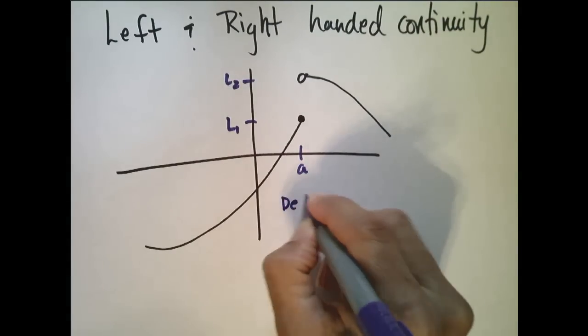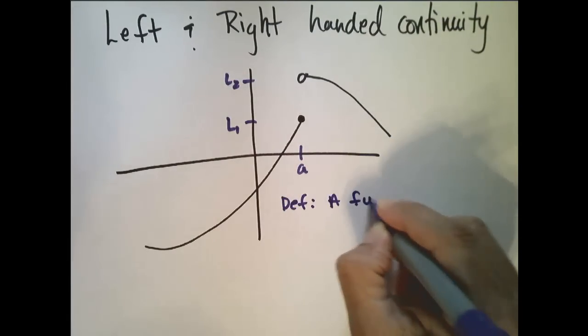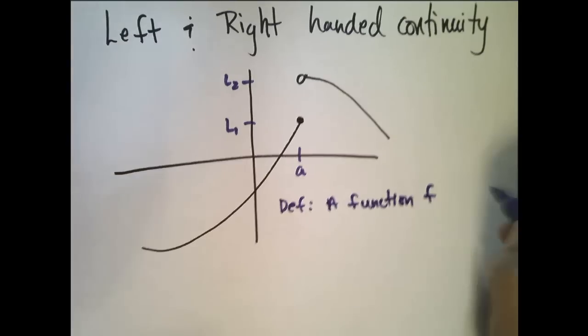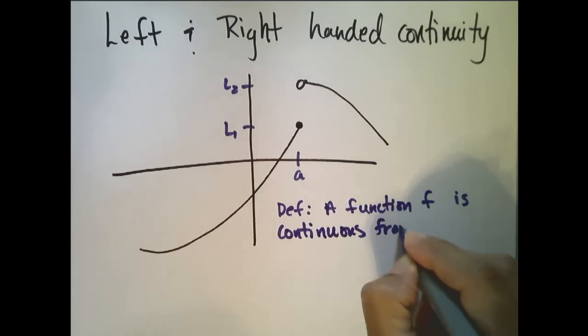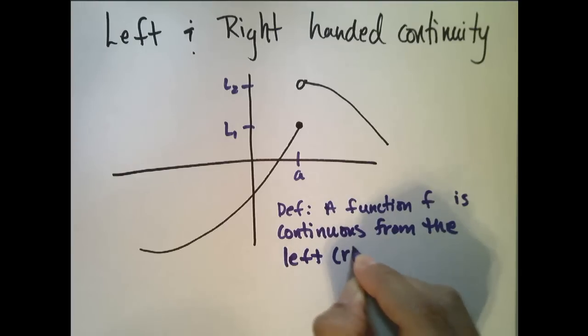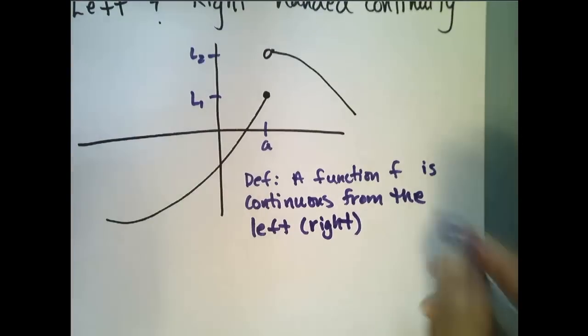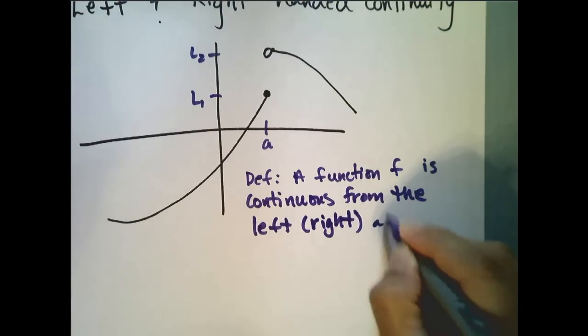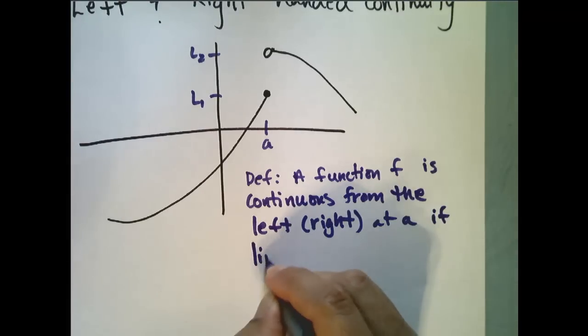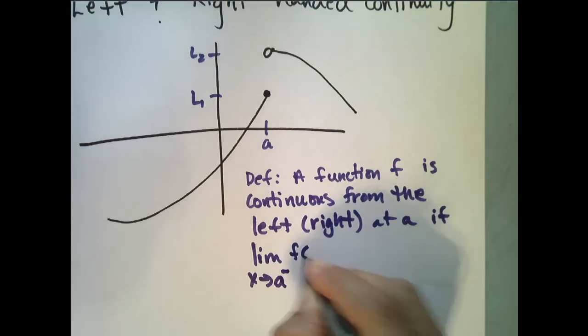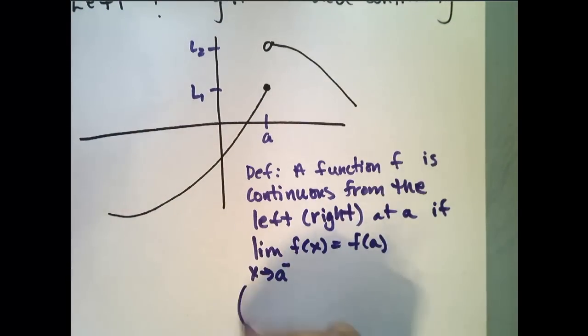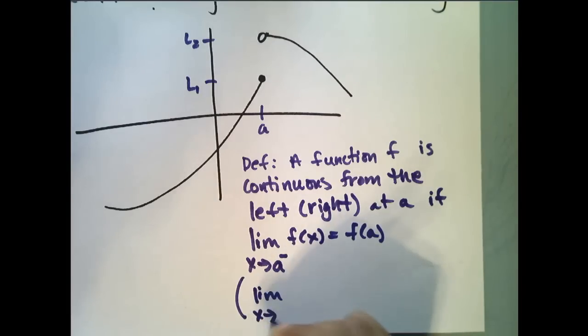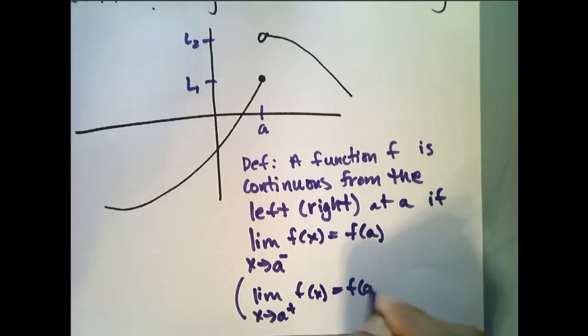Let's put a little definition here. We say a function f is continuous from the left (I'm going to put in parentheses right because this definition will hold on either side). It's continuous from the left at a if the limit as x approaches a from the left of f of x equals f of a. And likewise, the limit as x approaches a from the right of f of x equals f of a.